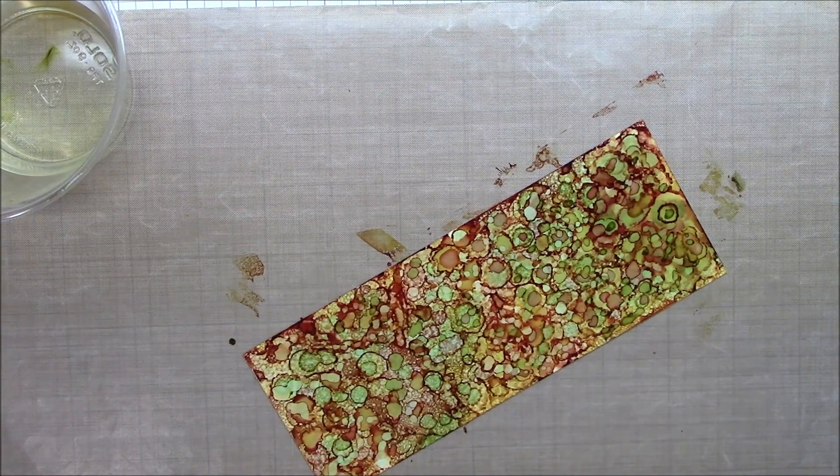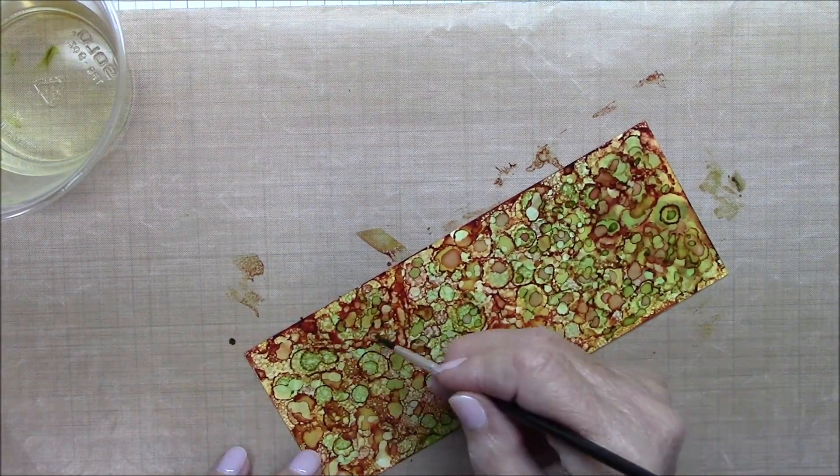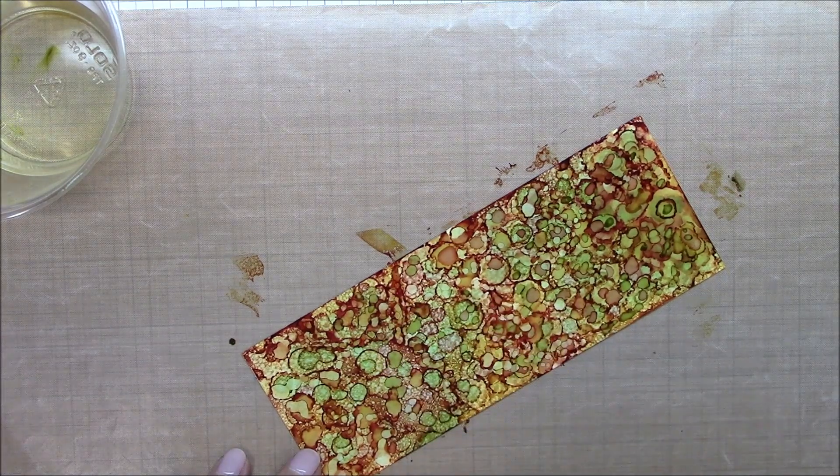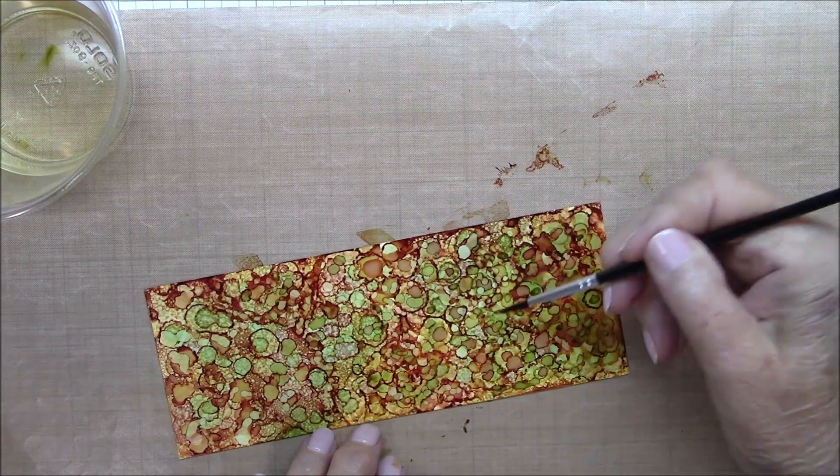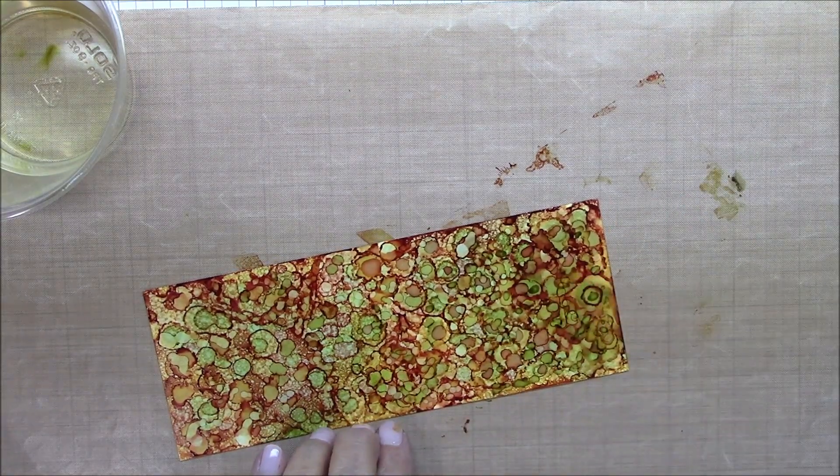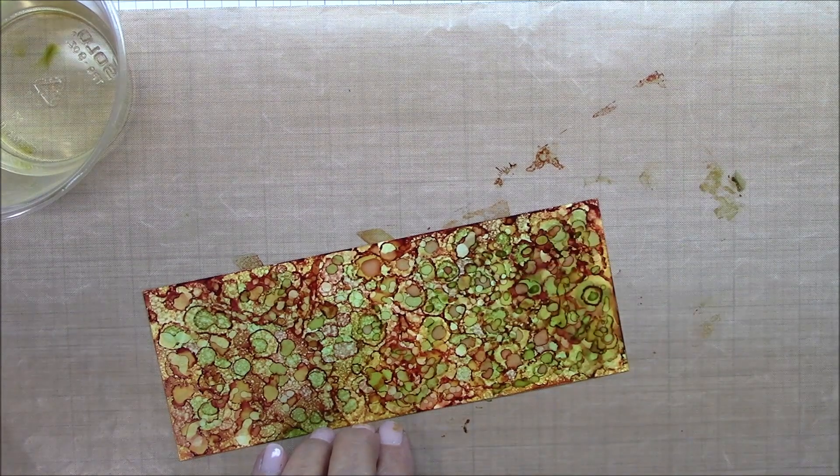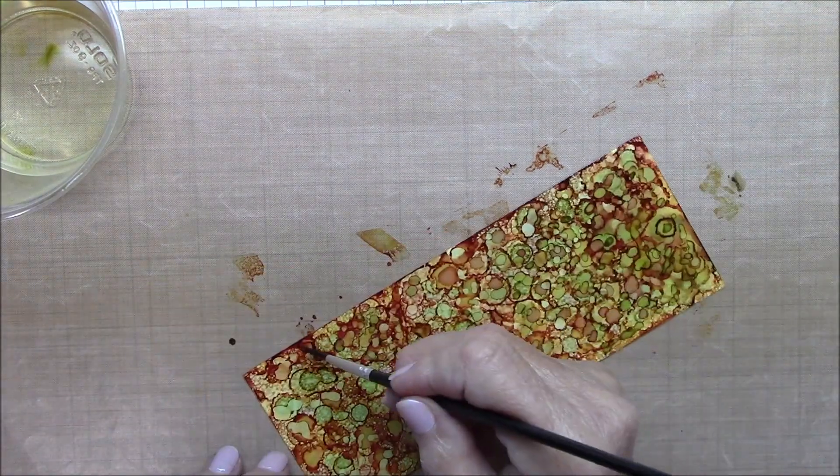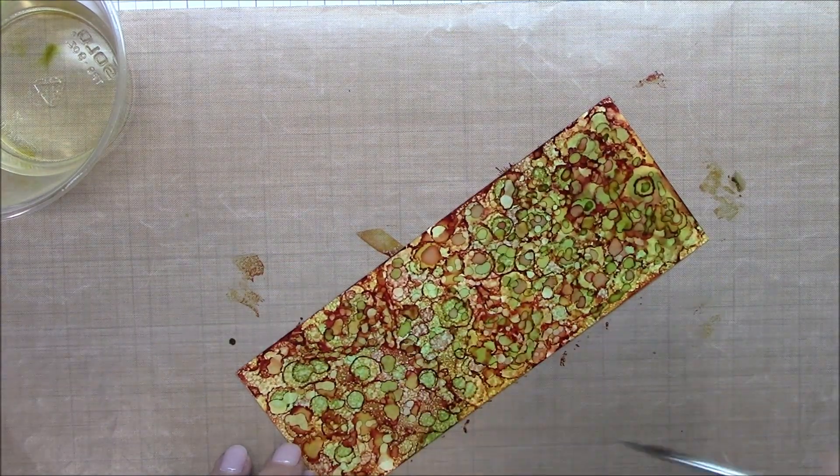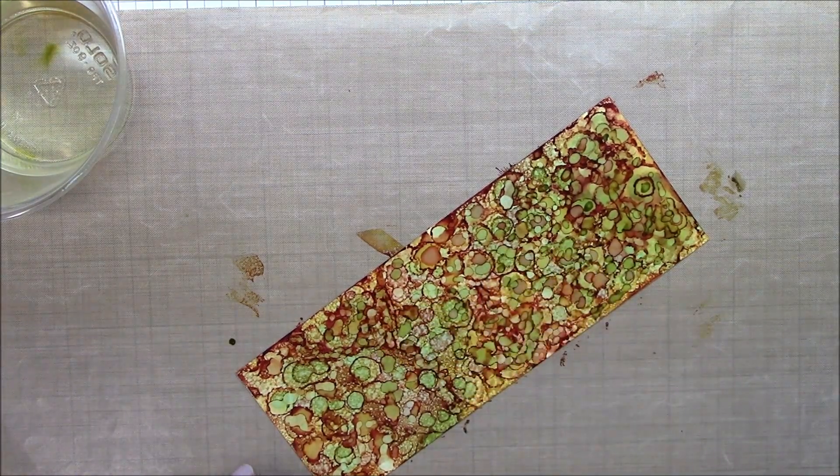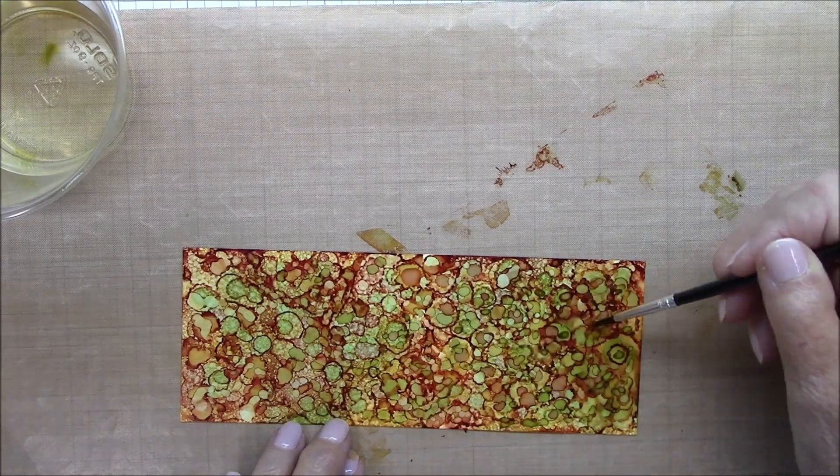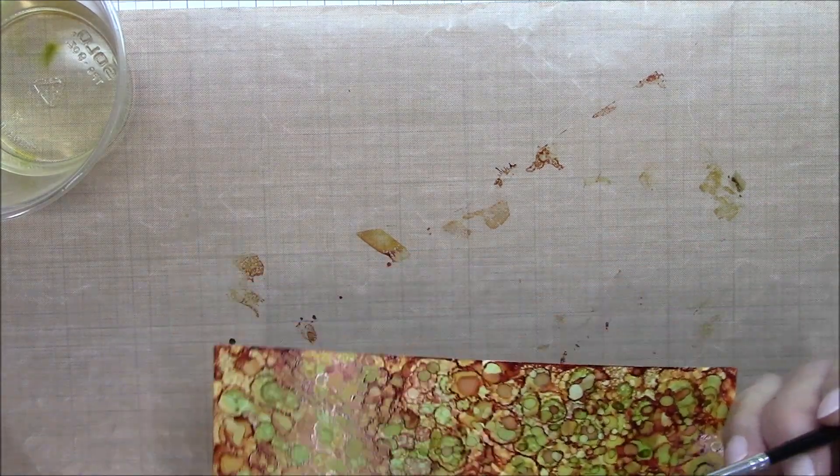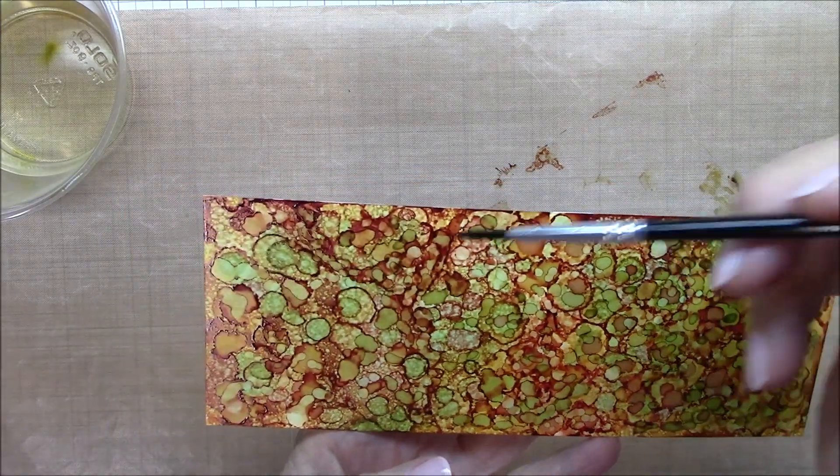So now I'm just going to keep on playing with it until I'm done. I see some areas that need a little work. That vein, as I called it, needed a little more breaking up than the Copic marker was giving me, so I used the tip of my brush dipped in alcohol.